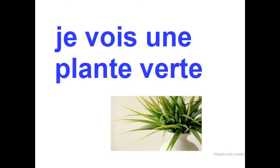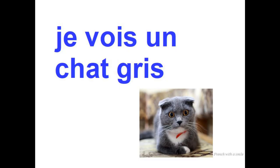Now you mix them together. You have the subject, the verb, and the complement. Je vois — what do I see? Une plante verte. I see a green plant. You have your sentence: je vois une plante verte. Together: je vois une plante verte. Can you see a grey cat? Je vois un chat gris. Once again: je vois un chat gris. Together: je vois un chat gris.